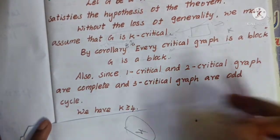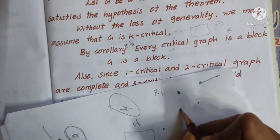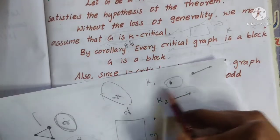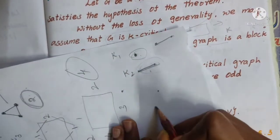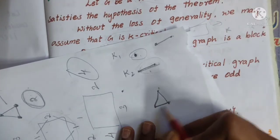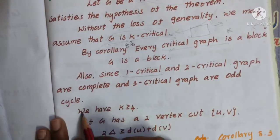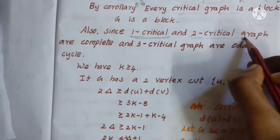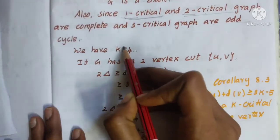Also, consider 1-critical and 2-critical graphs. In a 1-critical graph there is one vertex; a 2-critical graph has two connected vertices, which is K_2. So 1-critical and 2-critical graphs are complete. Three-critical graphs are odd cycles. Therefore, since 1-critical, 2-critical are complete and 3-critical are odd cycles, we have k greater than or equal to 4.